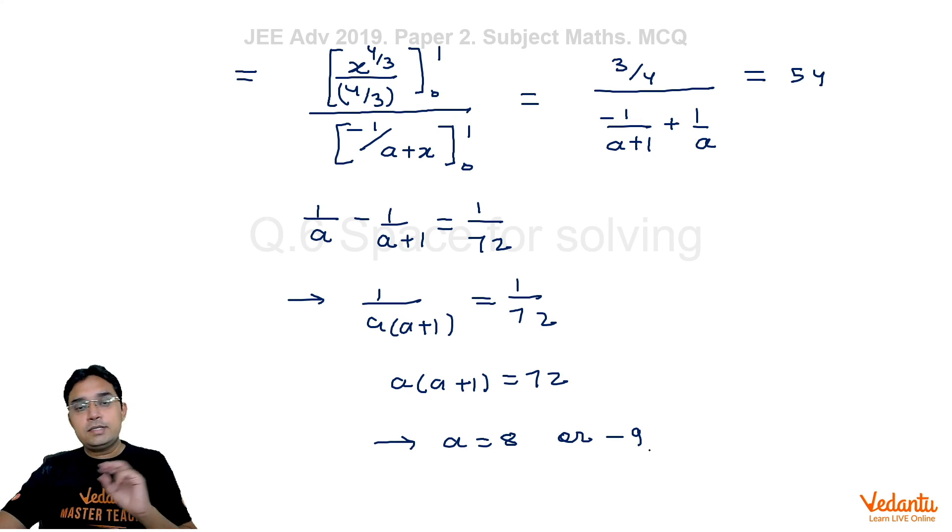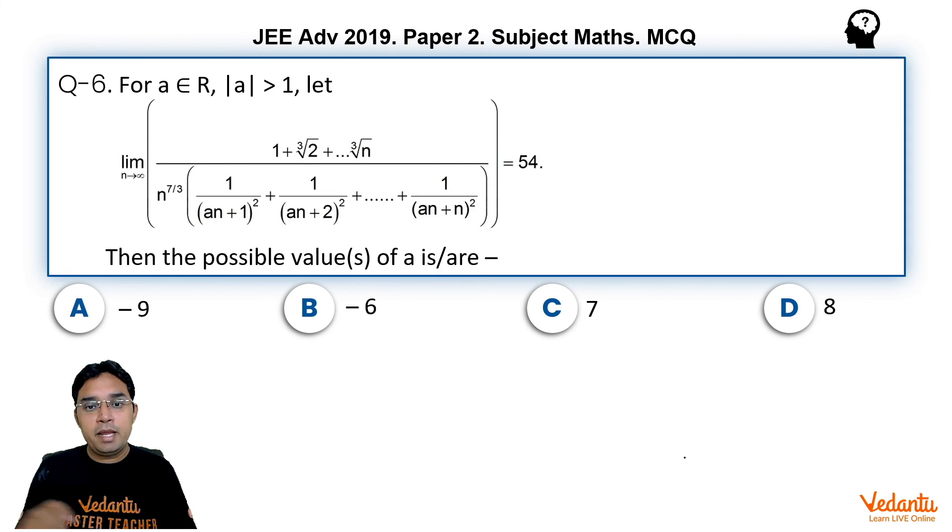So two answers are possible. Let me tell you in 2013 exactly similar question was asked and there also after solving a quadratic we were getting two answers but one of the answer was to be ruled out because of some domain problem. So let us here also see if 8 and minus 9 they can both be possible or not. I think in numerator if I put a as 8 or minus 9 answer will remain same there is no problem regarding any domain so answer will be A or D.